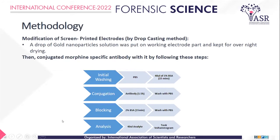Starting with methodology, I modified my screen-printed electrodes using gold nanoparticles and then further conjugated them using morphine-specific antibodies. To modify with gold nanoparticles, I used the drop casting method where a simple drop was put onto the working electrode part, which is the center part, and then it was kept overnight for drying. Further conjugation was carried out using antibody while following several steps, which started with initial washing, first with PBS, then with 40 microlitre of 1% BSA, kept for 15 minutes, then washed off. Further conjugation was done using antibody solution for 1.5 hours and then washed with PBS to remove the unbound antibodies.